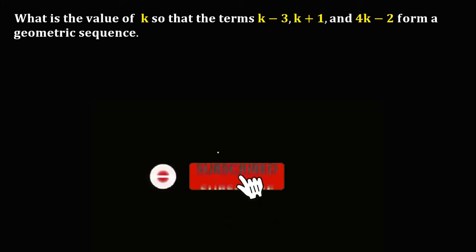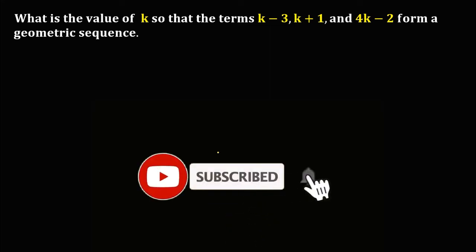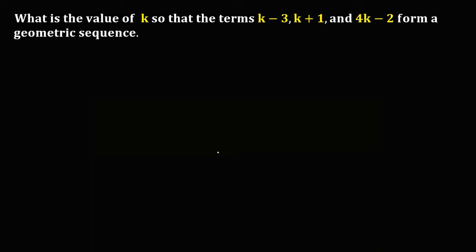Let's have this problem. What is the value of k so that the terms k minus 3, k plus 1, and 4k minus 2 form a geometric sequence? Since this is a geometric sequence, we need to make a ratio of two consecutive terms.